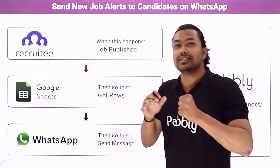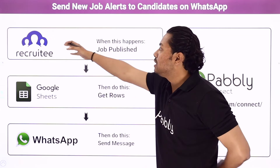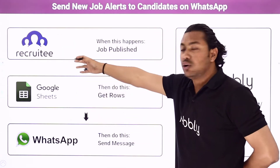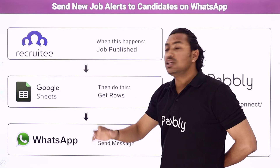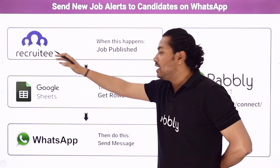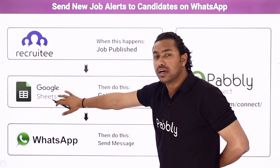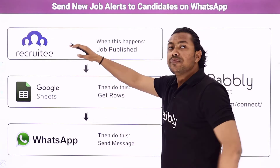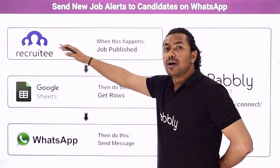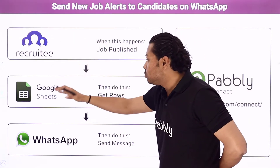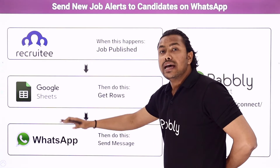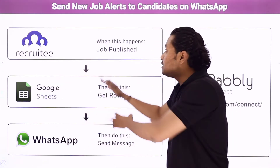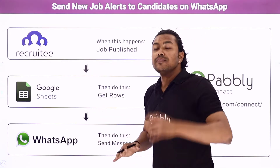Now why would you need this automation? Suppose you have been using Recruitee to hire candidates. You must have hired one or two candidates from Recruitee, but you are saving your candidates' data into a Google Sheets. Whenever you are going to publish a new job, that new job alert will be sent to the candidates' WhatsApp numbers, and those numbers will be taken from the Google Sheets. So this is what our automation is all about.